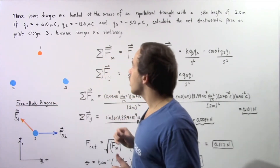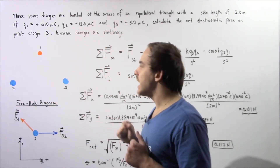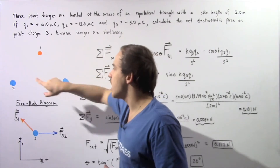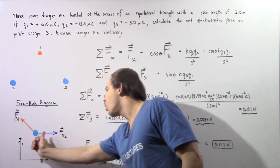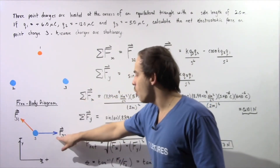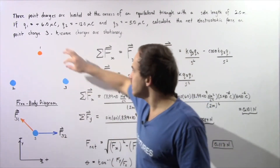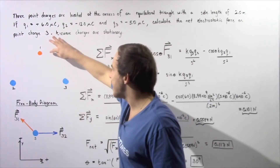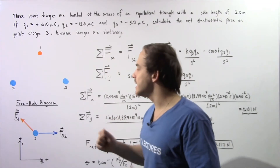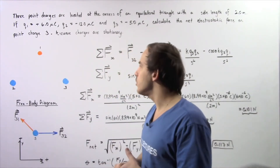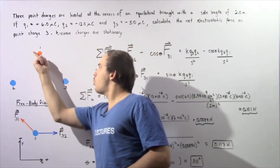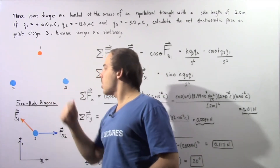Because these two charges have the same exact sign, they will repel one another. This point charge will attract the other point charge, and the force will point in the direction towards point charge number one.